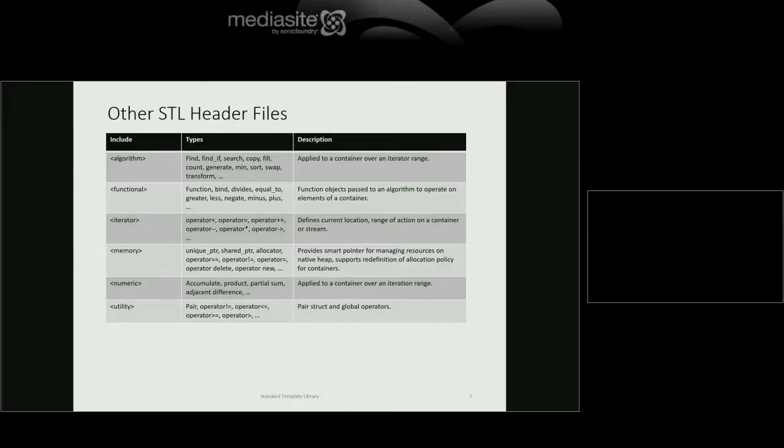The memory header includes unique_ptr, shared_ptr, and mechanics to define your own allocators. In some CAD systems, you might have thousands of objects all of the same size, so you could build your own allocator based on an array of fixed-size objects — that would be much faster than the generic allocator, which uses a memory manager based on a linked list of memory slots.